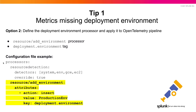The second option is to define the deployment environment using a processor and apply it to the OpenTelemetry pipeline. Using the resource add environment processor, we identify the action — which is insert — the value, which in this case is production environment, and the key, which is deployment.environment. This automatically tells our backend systems what our deployment environment is.